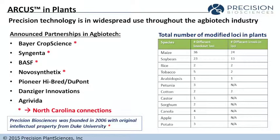This technology has actually been widely used throughout the ag biotech industry. Not a lot of it's published, but we'll show you some examples here. These are some of the announced partnerships that have been done in ag biotech. You know all these names: Bayer Crop Science, Syngenta, BASF, Nuva Synthetics, Pioneer Hybrid, Danzinger Innovations, AgriVita, and all of you recognize the connections there to North Carolina.